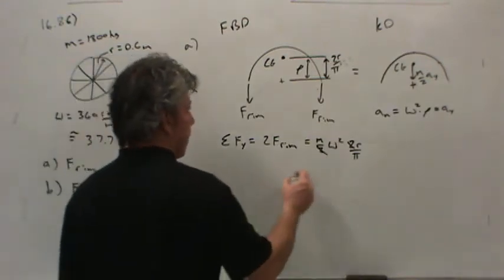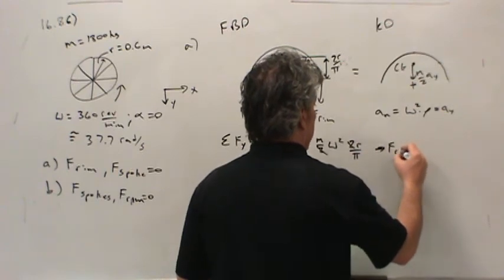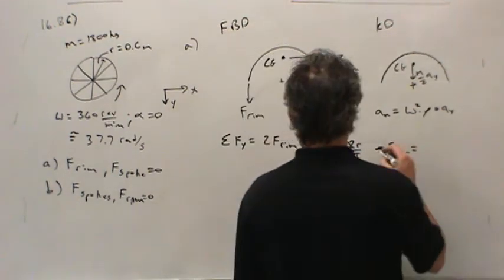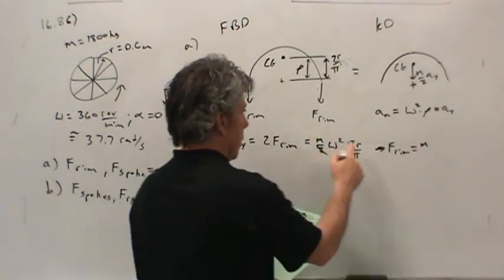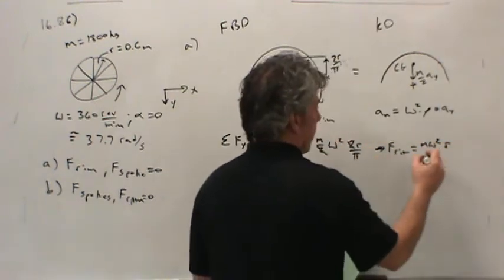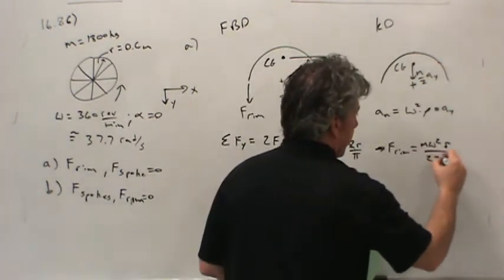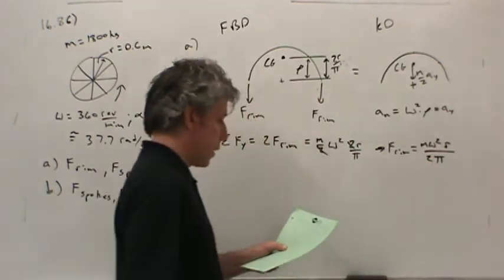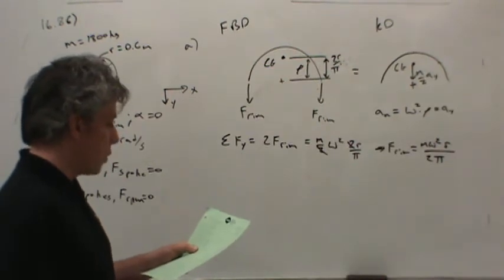So, the force in the rim is equal to, let's see, what have we got left? Mass from here, ω² from here, R from there over, now notice we've got a 2 we've got to move to the other side. This is going to end up in the denominator, so 2π. So, M ω² R over 2π.